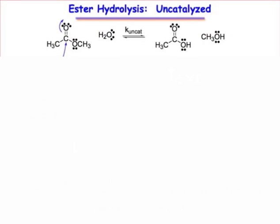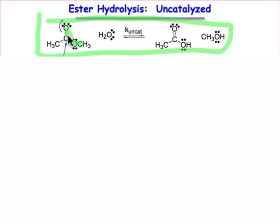Here we want to compare the mechanism for an uncatalyzed and catalyzed reaction so that we can discover how it is that the catalyst shows up in the rate law. We're going to look at the ester hydrolysis reaction, shown in this box. We have an ester group — that functionality — in the presence of water, which yields a carboxylic acid and a molecule of methanol. The overall process is governed by the rate coefficient K_oncat.